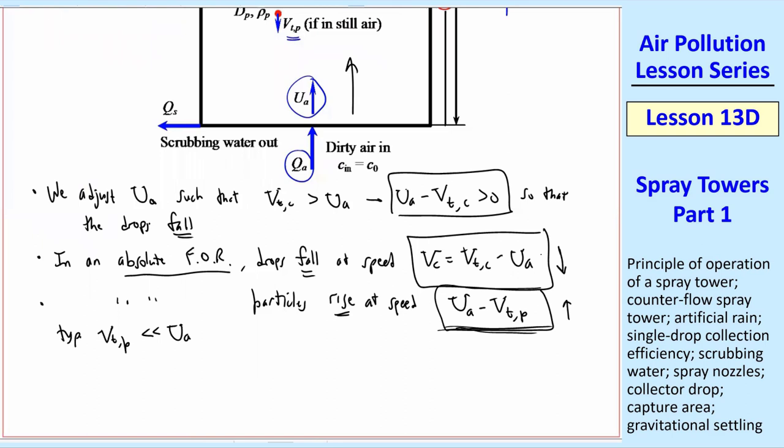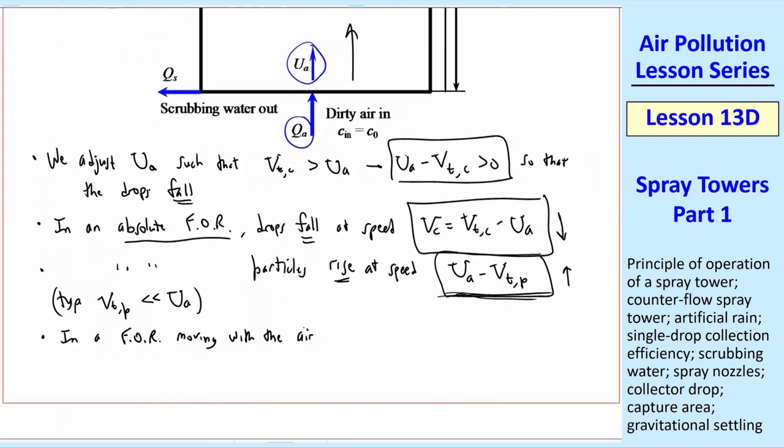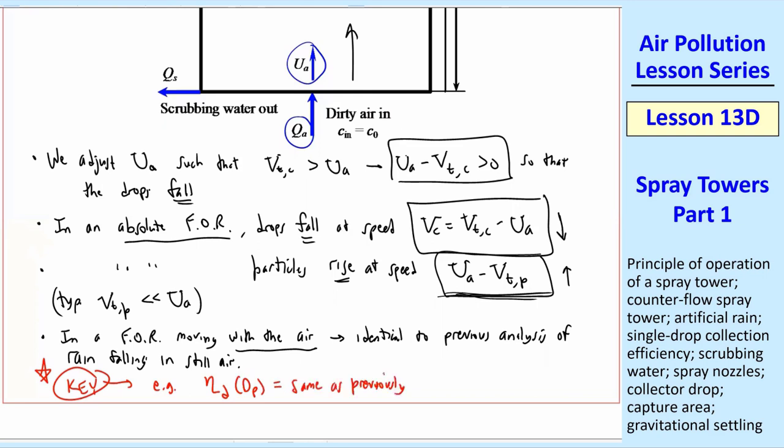In a frame of reference moving with the air, and this is the key, it's identical to our previous analysis of rain falling in still air. That's the key to calculating this stuff because, for example, the single drop collection efficiency, which is a grade efficiency, is exactly the same as we previously worked on. Namely, we use Calvert, England, and SLIN models to account for both inertial impaction and Brownian diffusion.